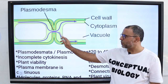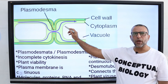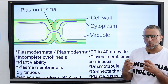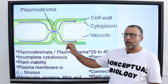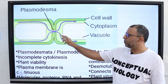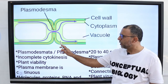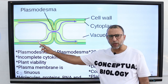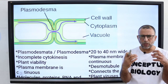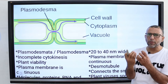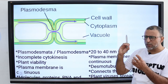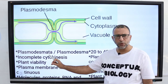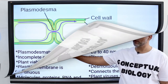Plasmodesmata are essential for plant viability. They are lined with plasma membrane, and the plasma membrane of one cell is continuous with the plasma membrane of adjacent cells. The two cells are connected through their cell membranes, and the gap present between the cells is called a Plasmodesma or Plasmodesmata.